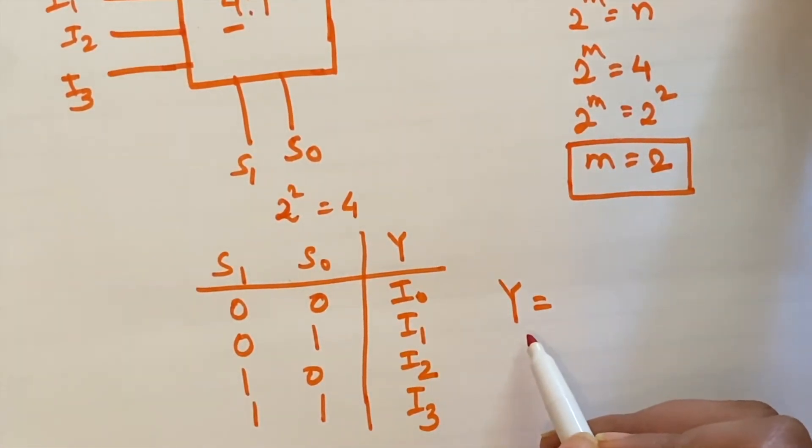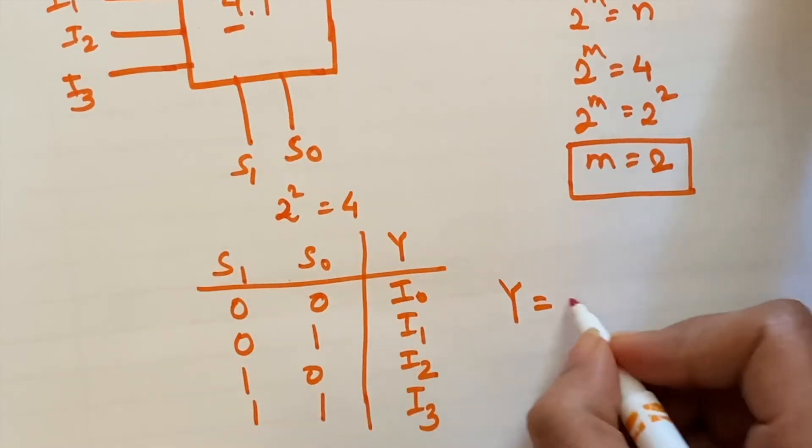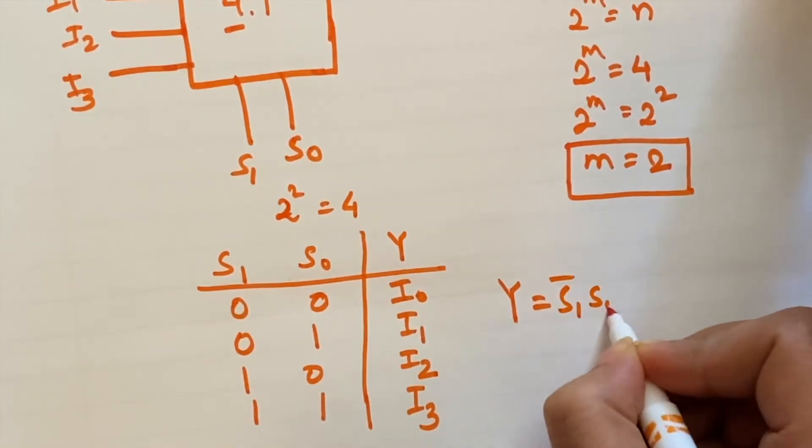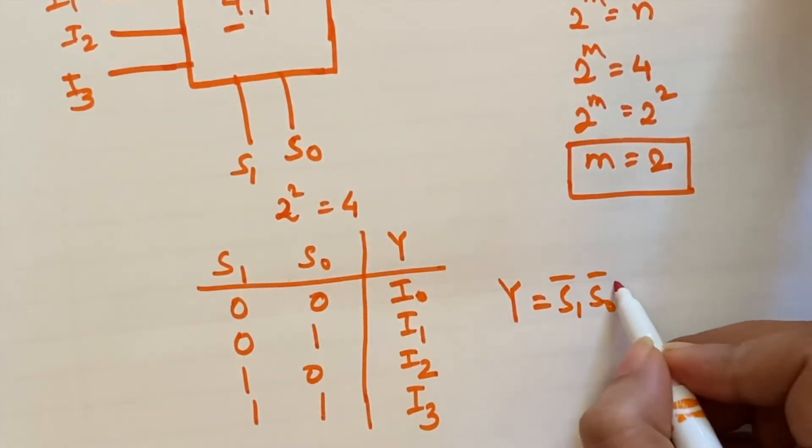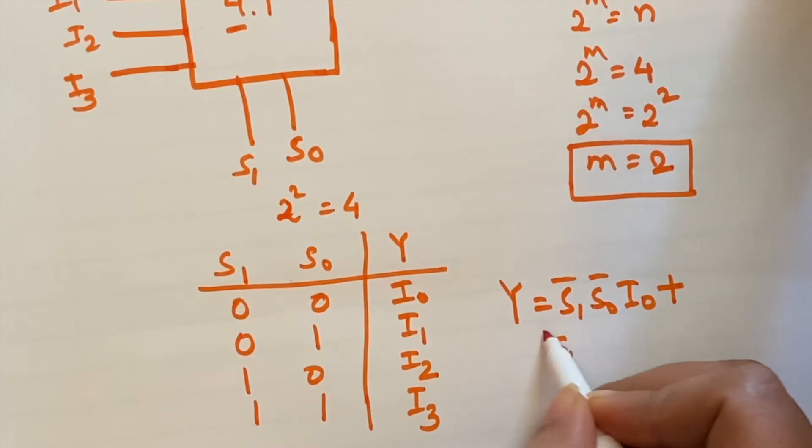Y, that is the output of the 4 is to 1 MUX. So let's consider the first case: s1 and s0 both are 0, so s1 bar s0 bar i0 plus second term for the i1, s1 bar plus, s1 bar s0 is 1, so s0 i1 plus...